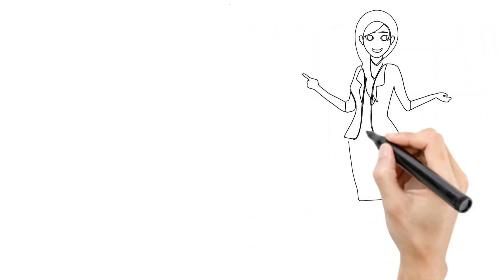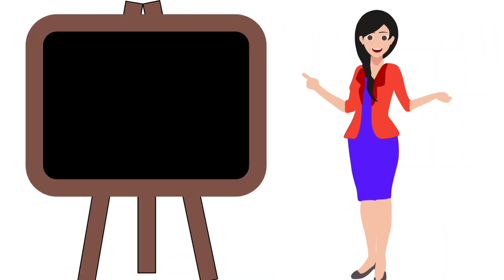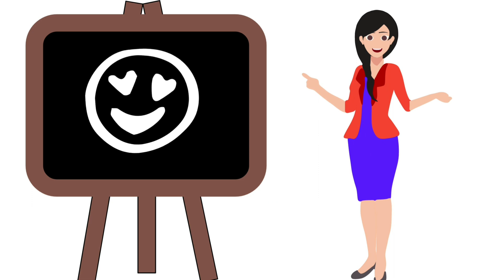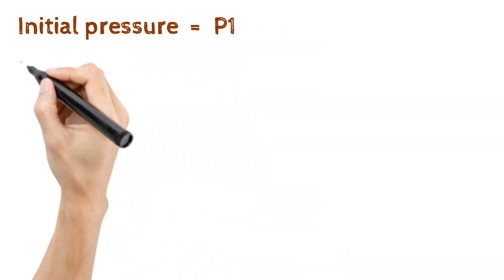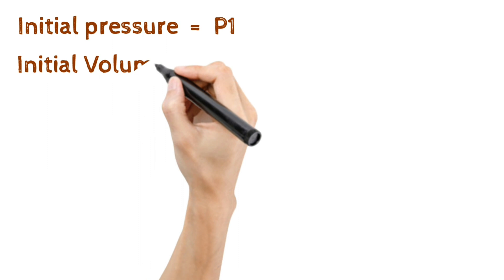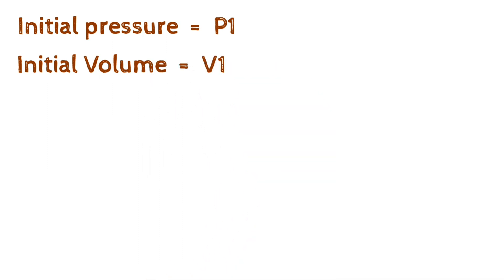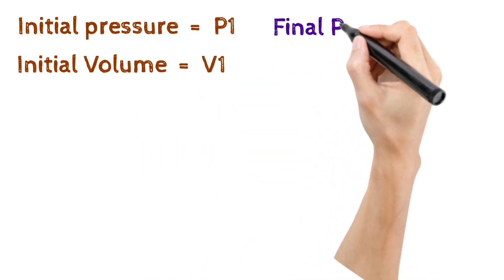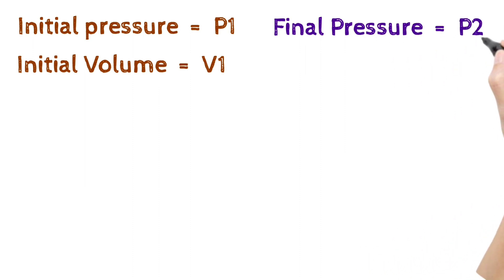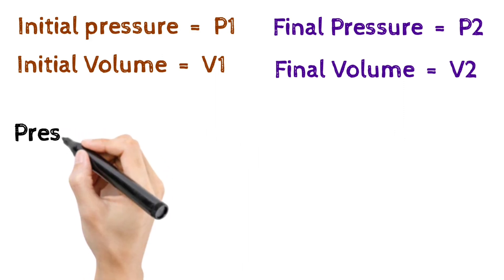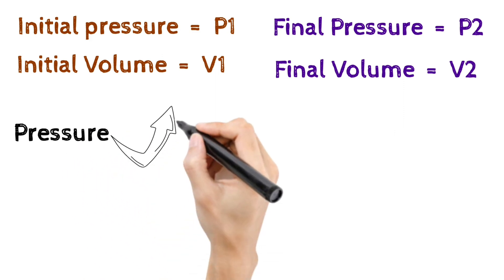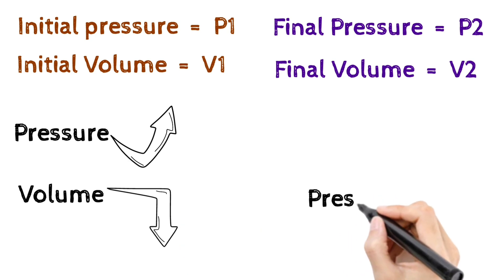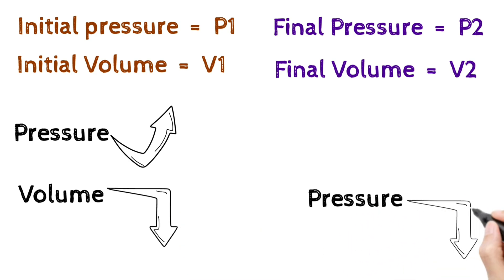Now let's see how to derive a simple formula that will help you to solve some mathematical problems. Imagine there is an amount of gas with an initial pressure, let's say P1 and initial volume of the gas is V1. After some changes have happened, let's consider the final pressure of the gas becomes P2 and the final volume becomes V2. Now we have already learned that when the pressure increases, the volume decreases, and similarly if the pressure decreases, the volume increases simultaneously.